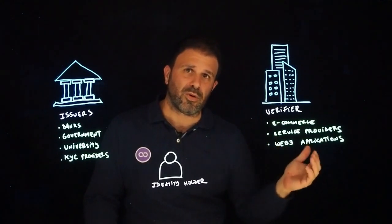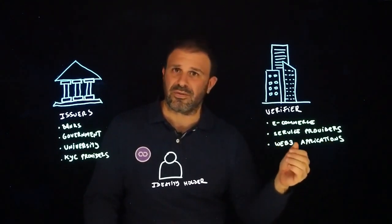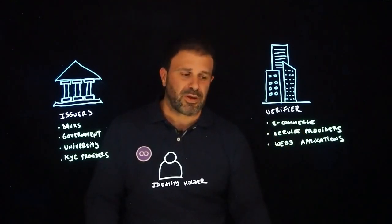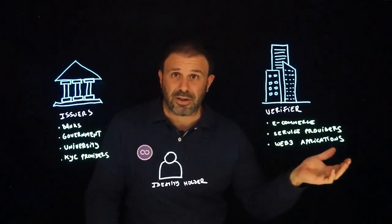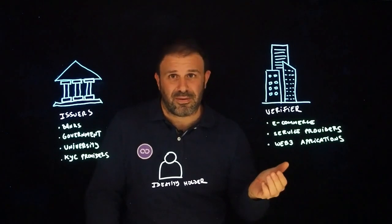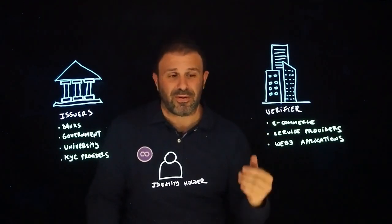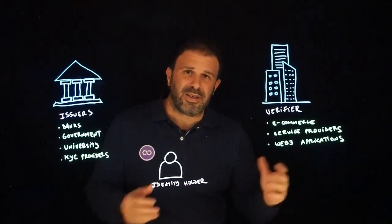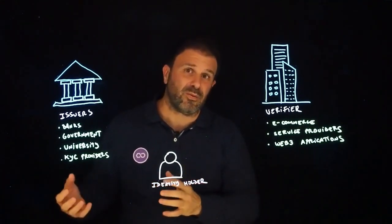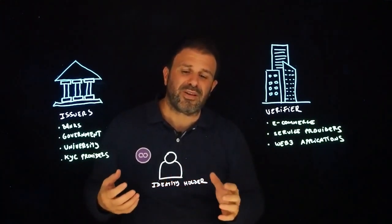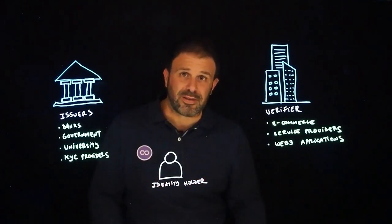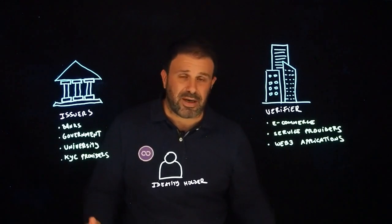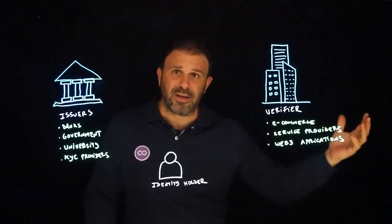Think about the things you can do in the real world. You can go to a bank, you can ask for a loan, you can present your ID, and they will trust the entire process. You can vote in a general election because they know that you are only voting once, and they know that you are a human being. All these things are difficult in the digital world because we cannot really trust our identities. An identity on the internet is nothing more than an email, and we don't know who is behind that.